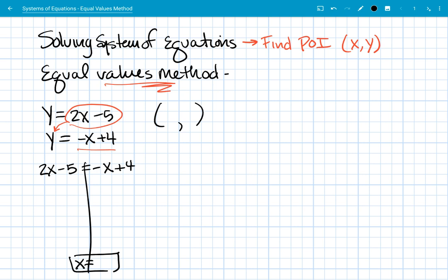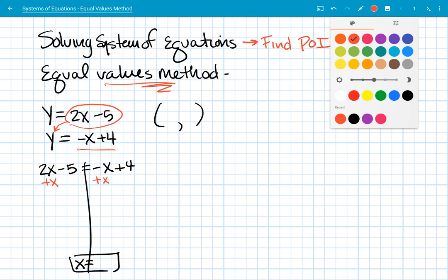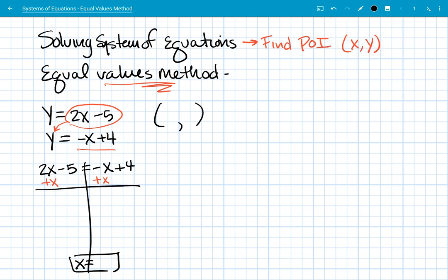Alright, so let's go ahead and solve this equation. I'm going to add the x because I would prefer to avoid negative x's if I can. And that's going to get me that 3x minus 5 equals 4. So I'm going to push that 5 to the right to get the x's isolated. I'm going to add 5.